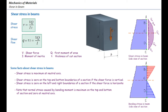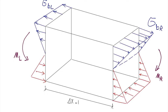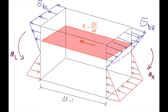Let's briefly review those concepts. Assume a rectangular beam subjected to two unequal moments: MR on the right side and ML on the left side. These moments produce bending stresses on the section, which have zero value at the neutral axis and maximum values on the top and bottom.